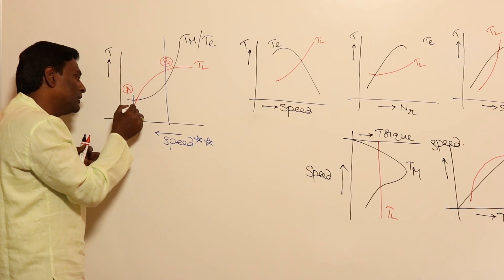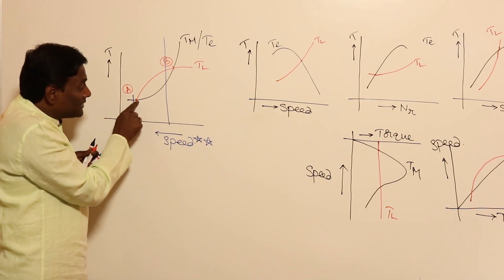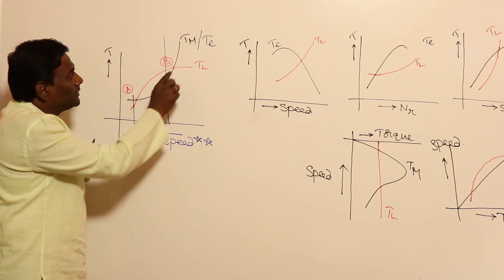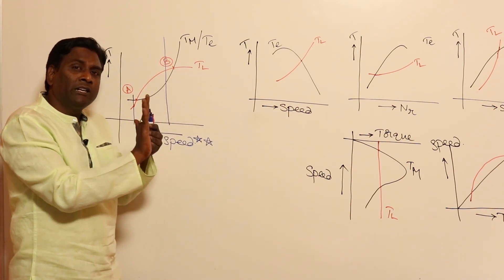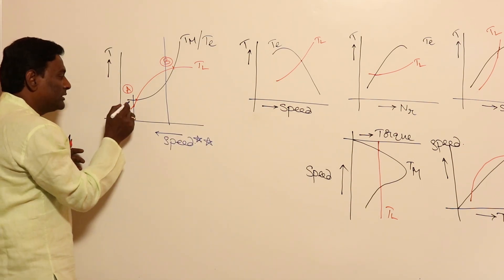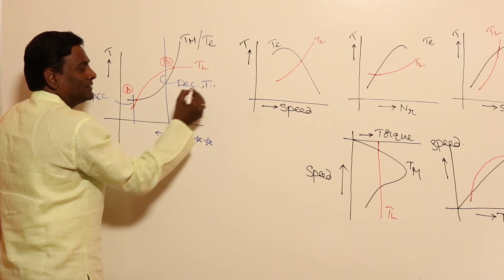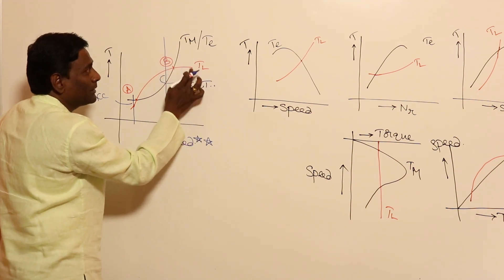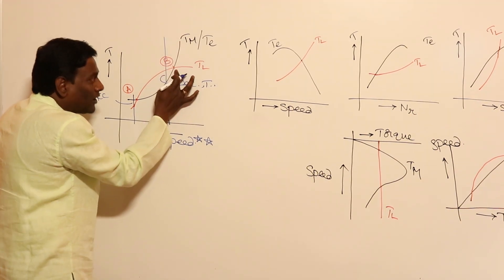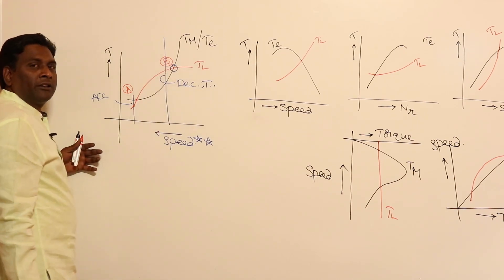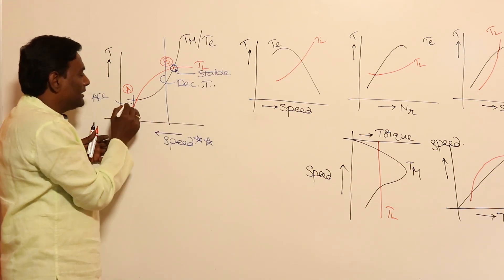Immediately after the junction point, in the direction of increasing speed: if motor torque developed is more and load torque requirement is less, it results in accelerating torque — that point is unstable. If load torque is more and motor torque is less, it results in decelerating torque — meaning the motor returns to that point, so it is a stable operating point.